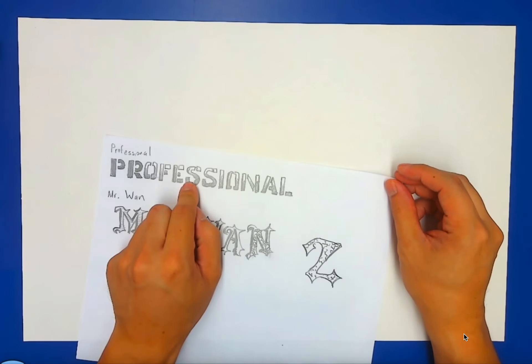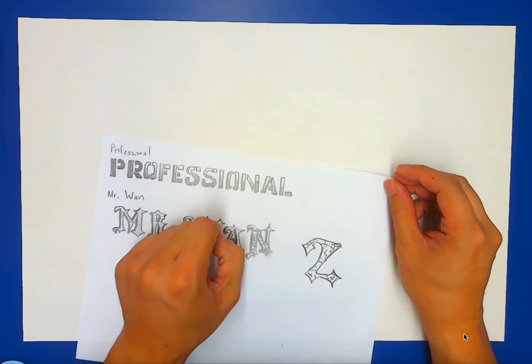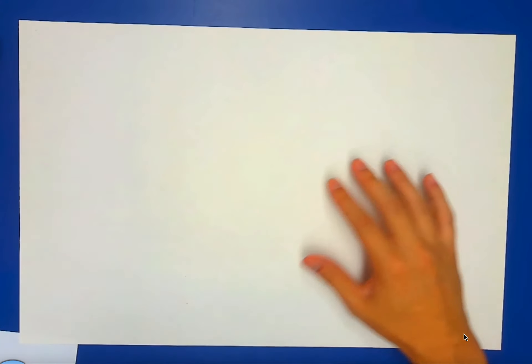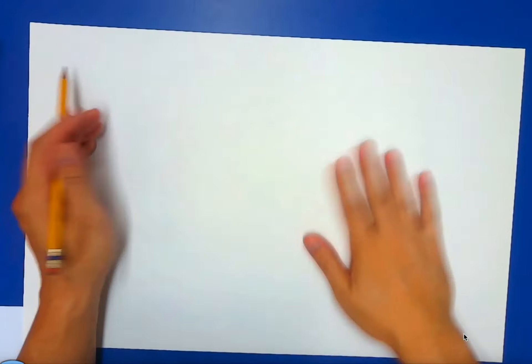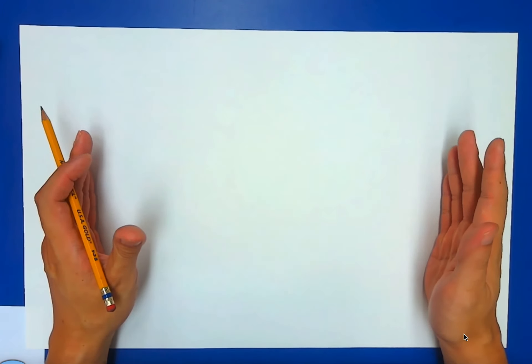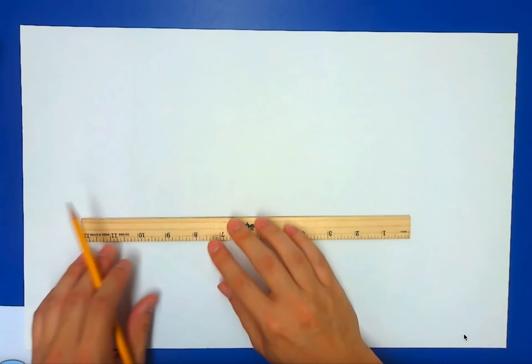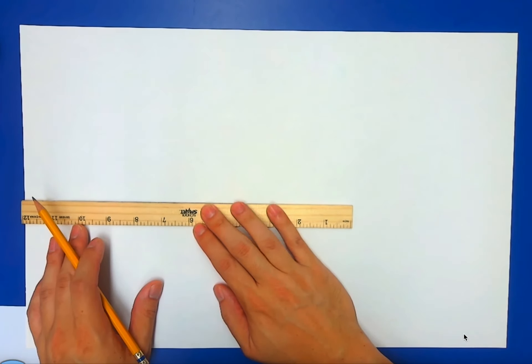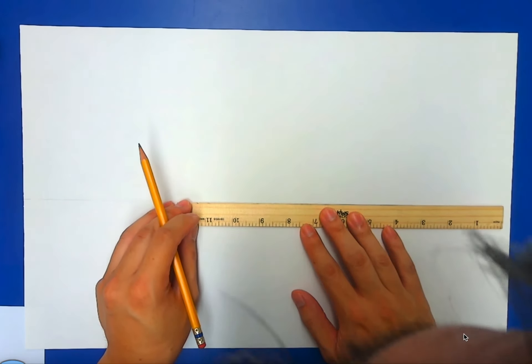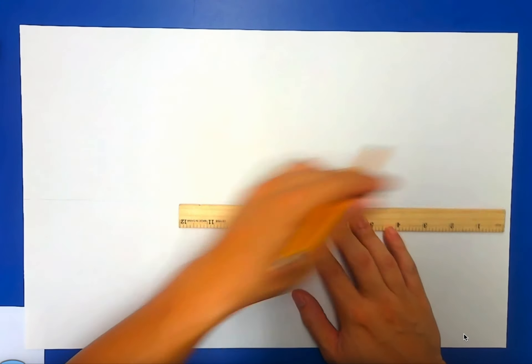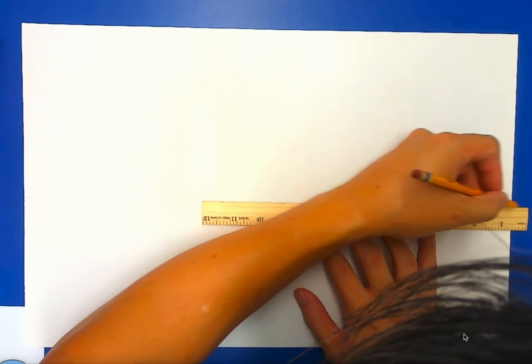First, you're going to convert the drawing you did — spend a little more time on it if anything needs adjusting or fixing to make it better for the bigger drawing. I want you to focus only on the lettering part right now. Don't worry about one-point perspective, don't worry about making it 3D — just focus on the lettering.